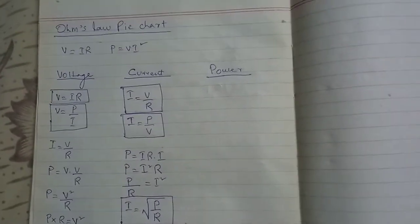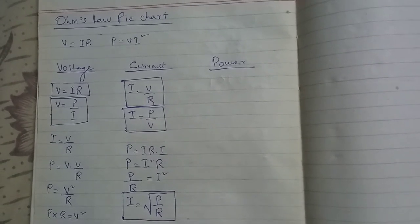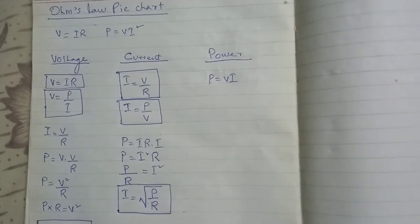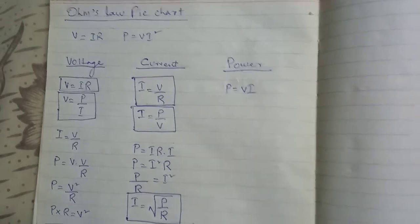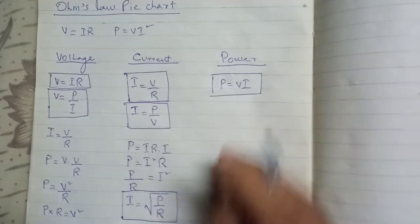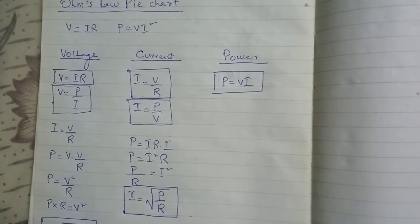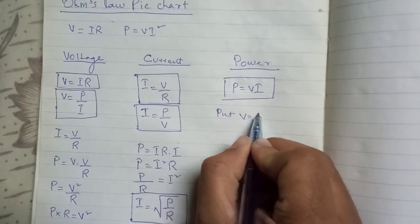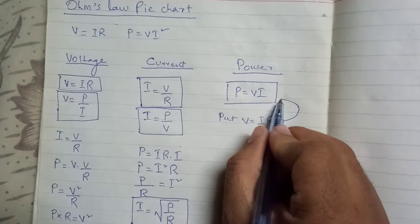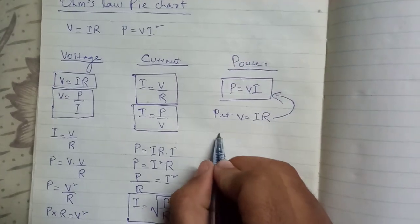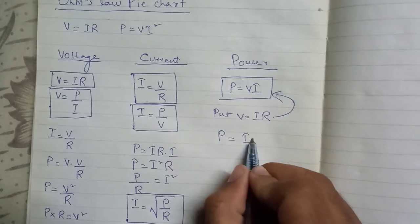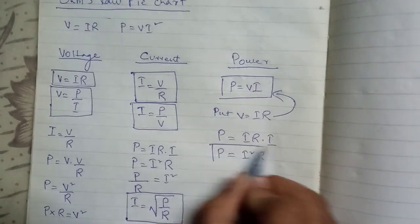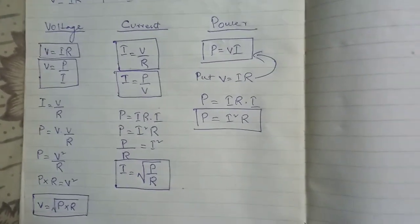The first formula of power, as you all know, is P is equal to VI — voltage multiplied by current. Close it into the box; this is the first formula for power. Put V is equal to IR into this formula and you will get the second formula for power, which is P is equal to IR times I, giving P is equal to I squared R. This is the second formula for power.